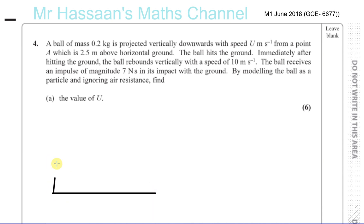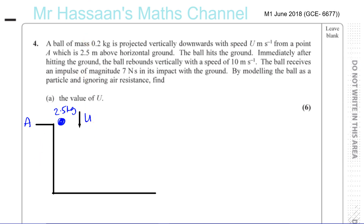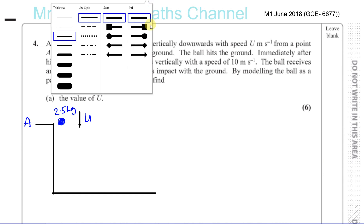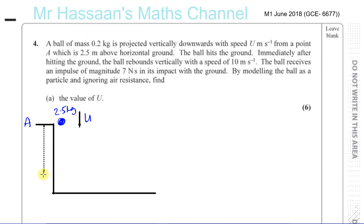Here we have the horizontal ground and here we have the point A, up here somewhere. So this is the level of A. The ball is of mass 0.2 kg and it's projected vertically downwards with a speed of u, which we don't know. Its distance from the ground is 2.5 meters.